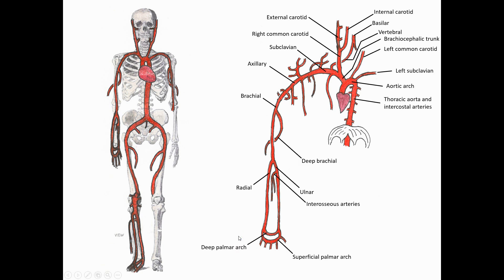Here are the named branches coming off of this area. There are multiple branches and several not illustrated, but this is a good introduction to the major branches going to the thorax, head and neck, and upper limb.